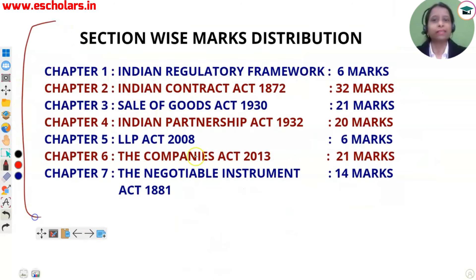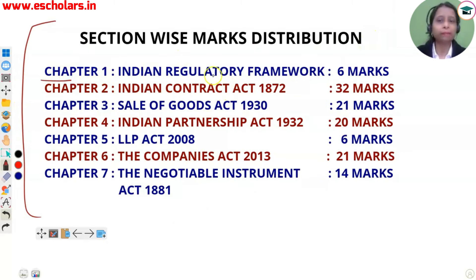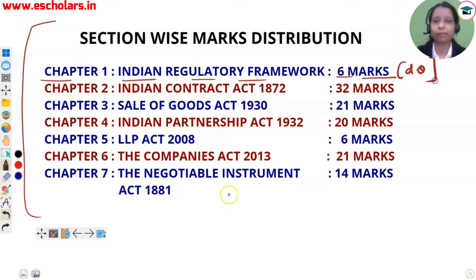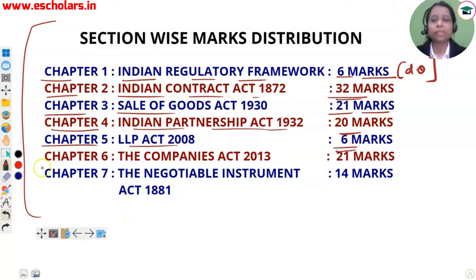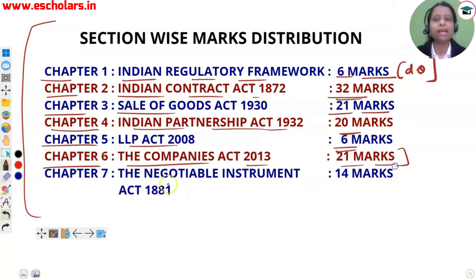Let's look at the section-wise or chapter-wise marks distribution. Chapter 1, Indian Regulatory Framework: 6 marks — direct question. Chapter 2, Indian Contract Act: 32 marks — both direct and case-based. Chapter 3, Sale of Goods Act: 21 marks. Chapter 4, Indian Partnership Act: 20 marks. Chapter 5, LLP Act. Chapter 6, Companies Act 2013: 21 marks. Chapter 7, Negotiable Instruments Act: 14 marks.